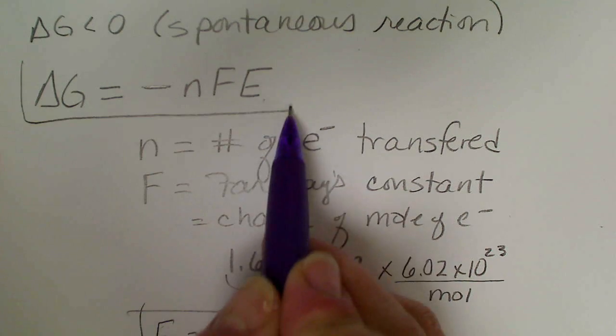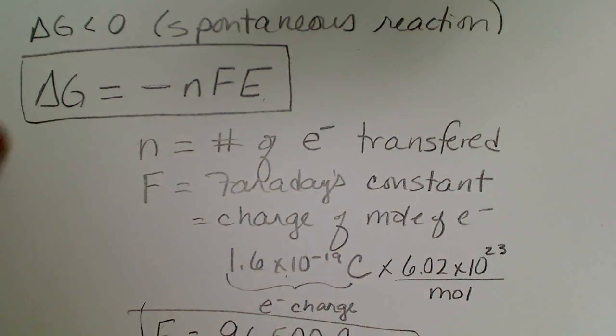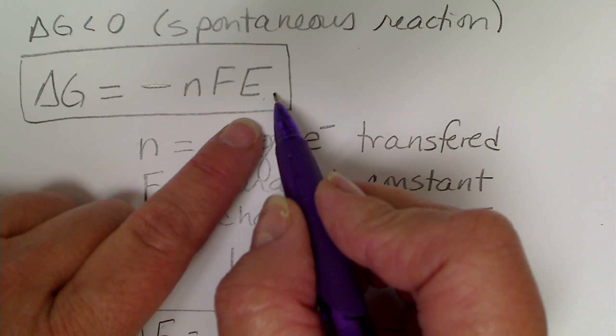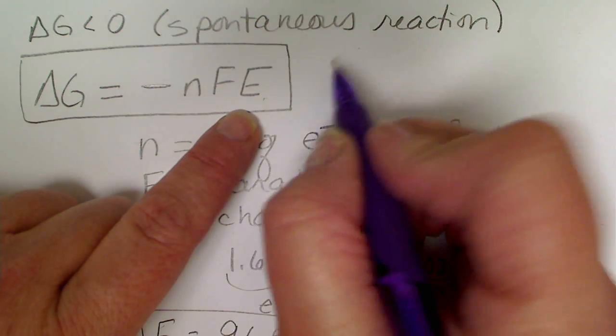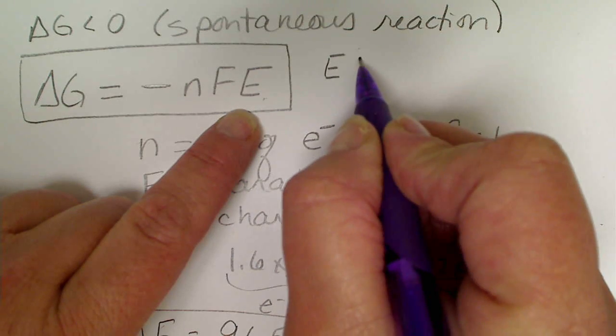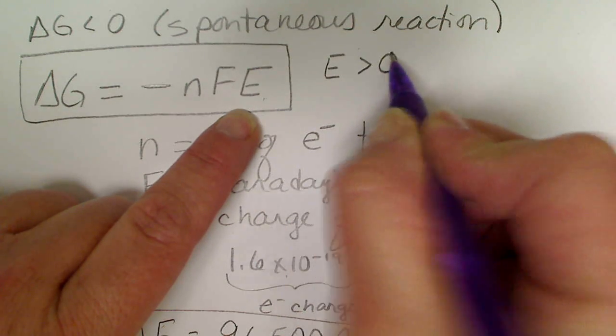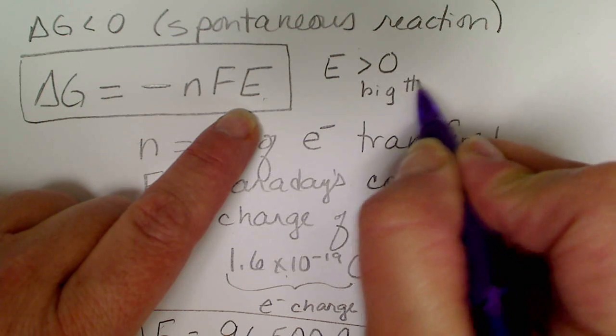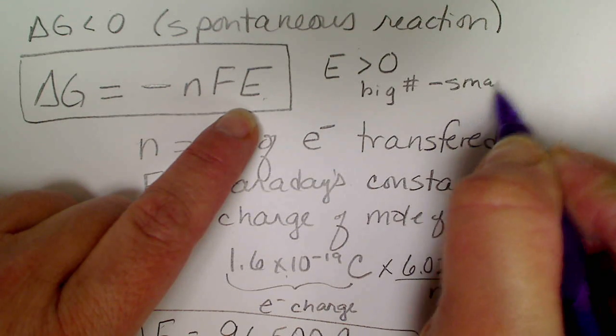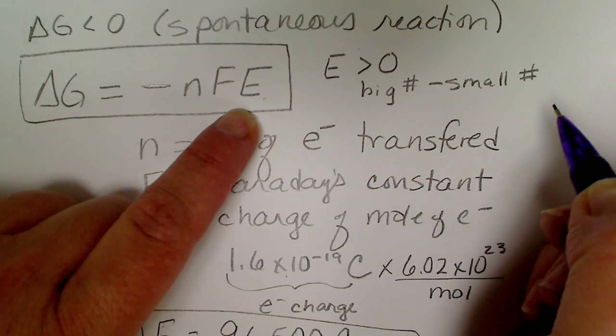The negative sign is part of the formula for calculating delta G. Recall in a previous video we discussed that anytime we have two metals together, the cell potential is always going to be greater than zero because we calculate that by taking the big number minus the small number.